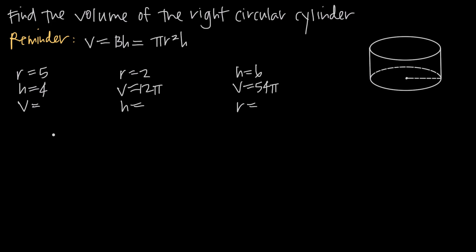In the first example, we know that the radius of the circular base is 5 units and the height of the cylinder is 4 units, and we need to find volume. Labeling the cylinder: radius is 5, height is 4. Since we've been given radius and height, we'll use V = pi r squared h. So volume equals pi times 5 squared times 4. Simplifying: 5 squared is 25, and 25 times 4 is 100.